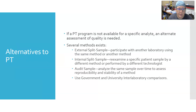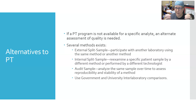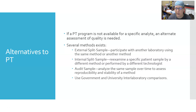There are some alternatives to proficiency testing. If a proficiency testing program is not available for a specific analyte, an alternate assessment of quality is needed. Options include: an external split sample — participating with another laboratory using the same or a different method to test the same sample and comparing results; an internal split sample — re-examining a specific patient sample by a different method or a different tech to see if you get the same results; an audit sample — analyzing the same sample over time to assess reproducibility and stability of a method; and the use of government or university inter-laboratory comparisons.